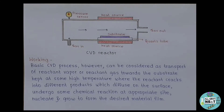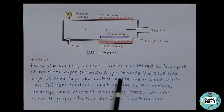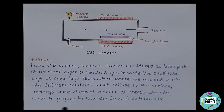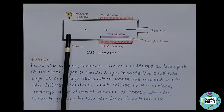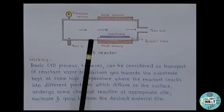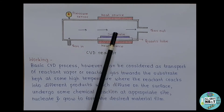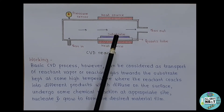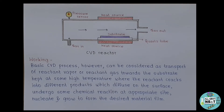The basic CVD process can be considered as transport of reactant vapor towards the substrate kept at high temperature, where the reactant cracks into different products which diffuse on the surface, undergo chemical reaction at an appropriate site, then nucleate and grow to form the desired material film. The reactant gases enter the reactor, travel towards the substrate, crack into products, react on the surface, and finally the desired material is deposited.